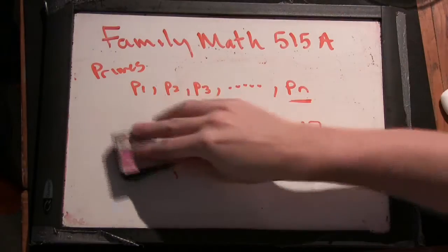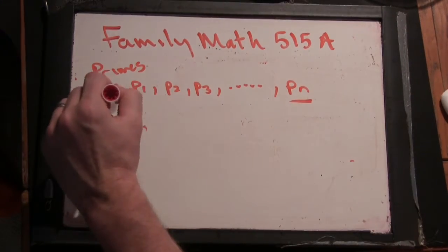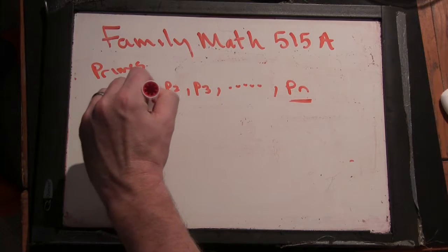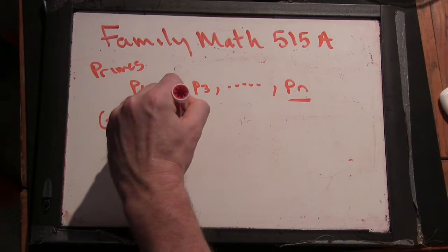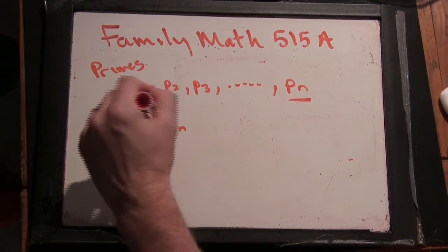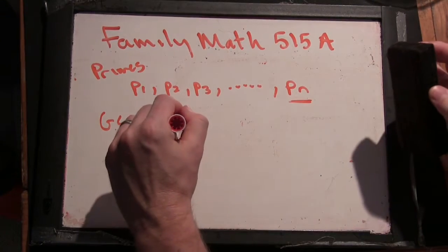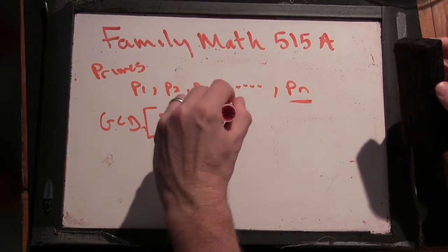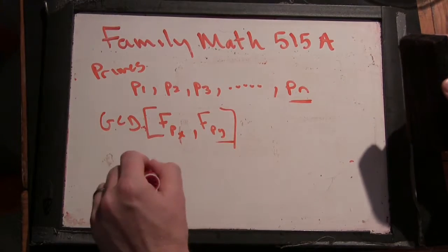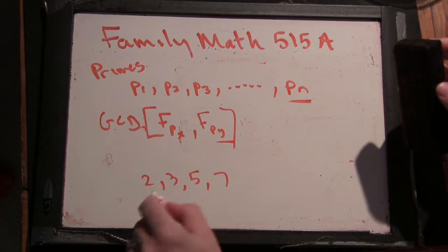So now we're going to use our formula from before. The greatest common divisor of the Fibonacci number index with the primes, I'll call it prime n. Oh, I already used n. Better be careful. So I use the index as prime x and Fibonacci prime y. Remember, we had 2, 3, 5, 7. So the indexes are going to be prime numbers.